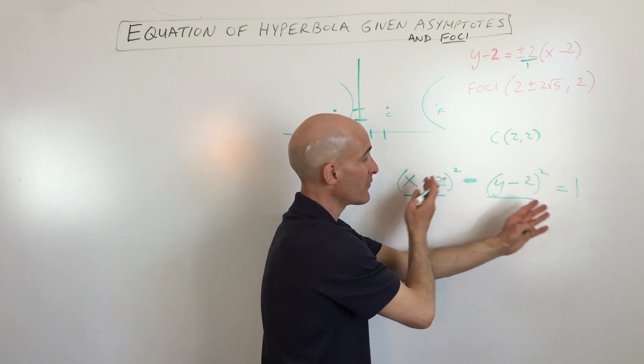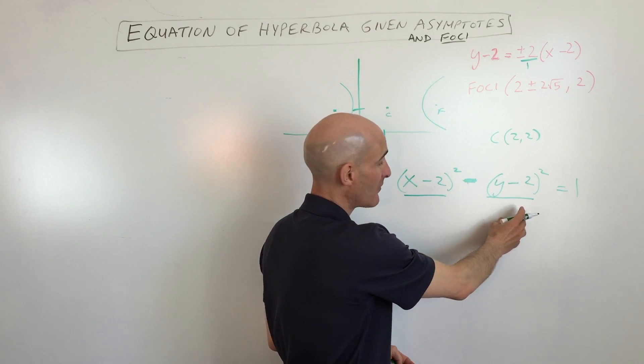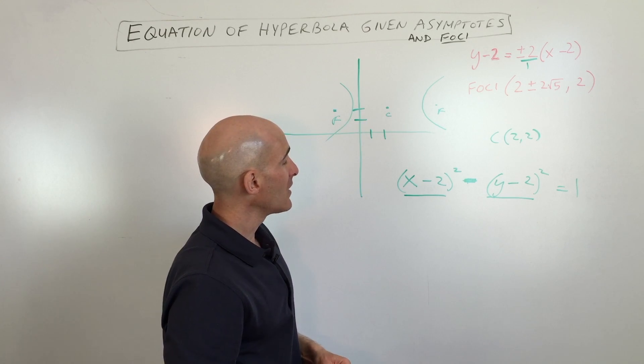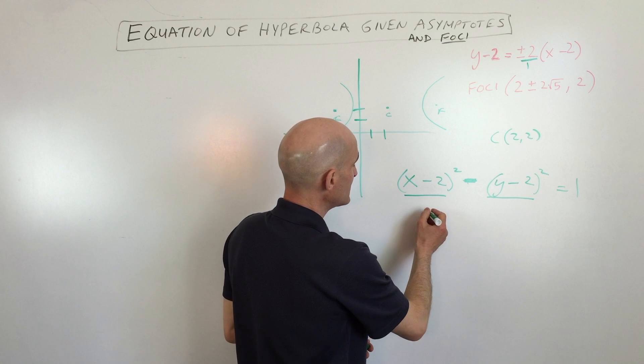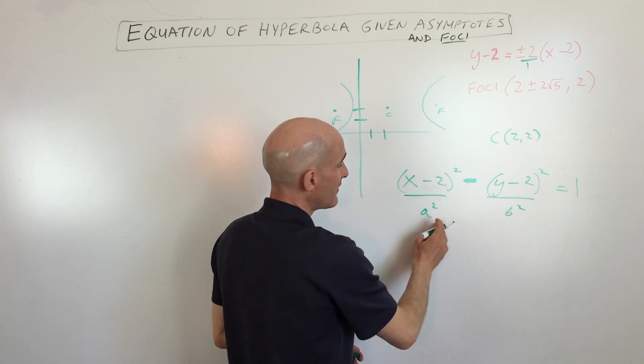So this is going to be the rise, and this is going to be the run. Now, if these terms were reversed, then we want to take the term here, the one that's underneath the y value divided by the one underneath the x value. So what we're going to do here is we're going to say, this is a squared, this is b squared.